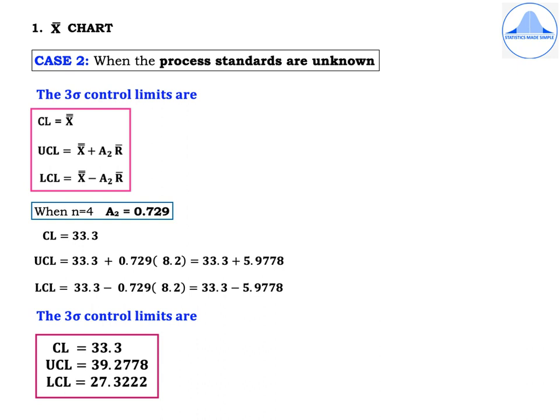For the x-bar chart (Case 2, standards unknown), the three-sigma control limits are: CL = x-double-bar, UCL = x-double-bar + A₂·R-bar, LCL = x-double-bar − A₂·R-bar. When n = 4, A₂ = 0.729. Substituting and simplifying: CL = 33.3, UCL = 39.2778, LCL = 27.3222.